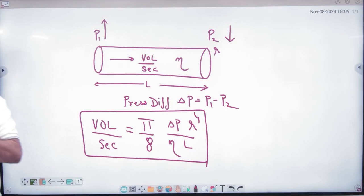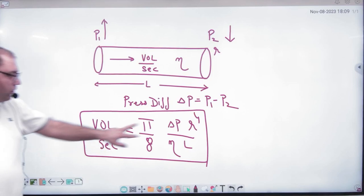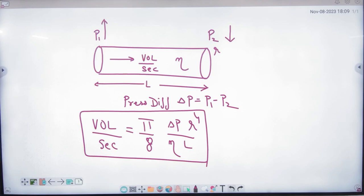In Poiseuille's formula, this is the volume flowing per second.